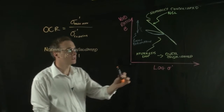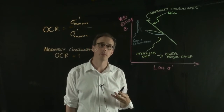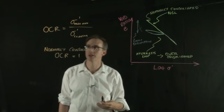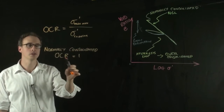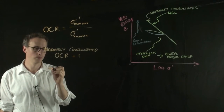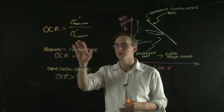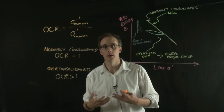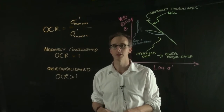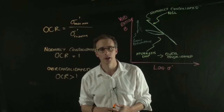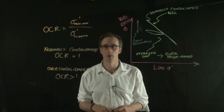For soils that are over consolidated, the previous maximum stress is greater than their current stress, so for over consolidated soils you have an OCR that's greater than one. We know how to calculate the current stress in a soil from a previous video, but how do we determine the maximum previous stress? We can do that from a one-dimensional oedometer test by analyzing the results during loading.